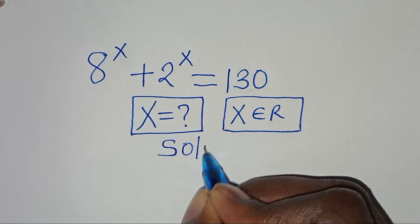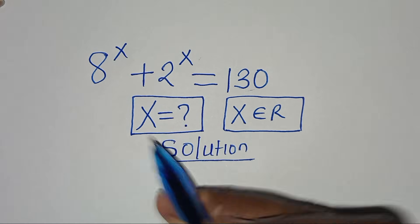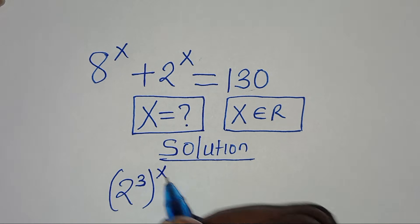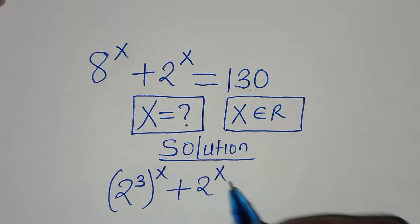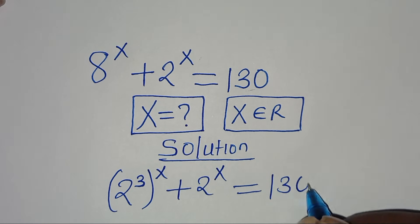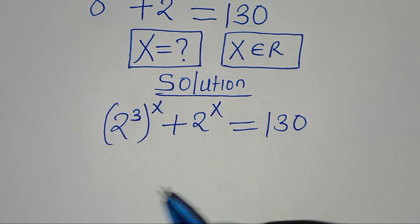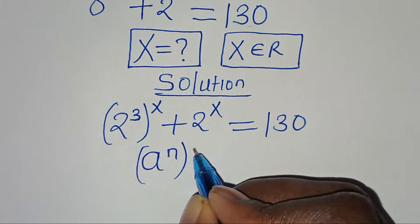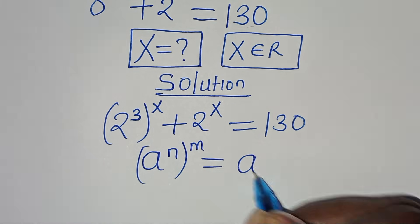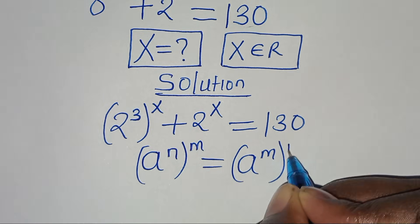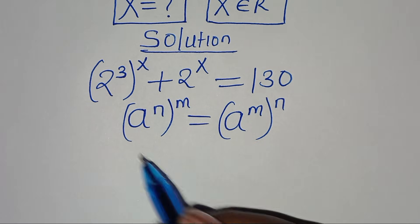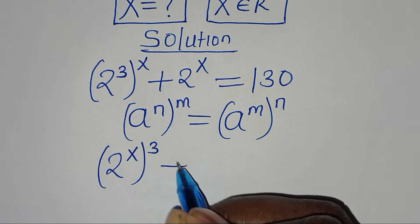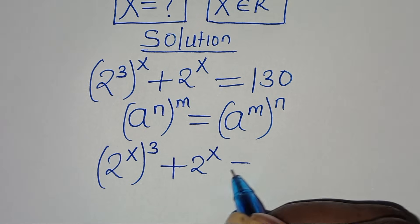So let's provide a solution. We can express 8 as 2 to the power of 3, then this to the power of x, plus 2 to the power of x. This is equal to 130. Now, 2 to the power of 3, raised to the power of x, is in the form of a to the power of n, raised to the power of m, which we can express as a to the power of m raised to the power of n. Applying this exponent property, we have 2 to the power of x, raised to the power of 3, plus 2 to the power of x, equal to 130.